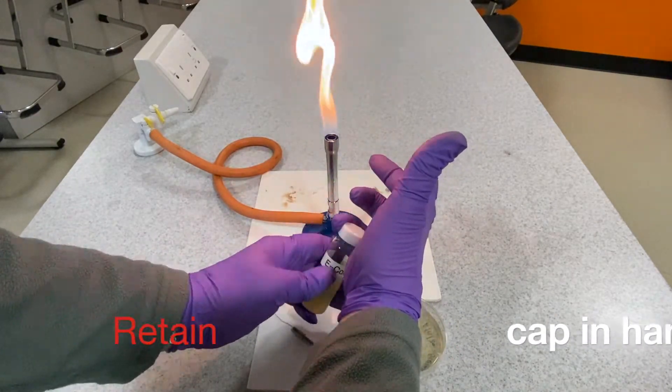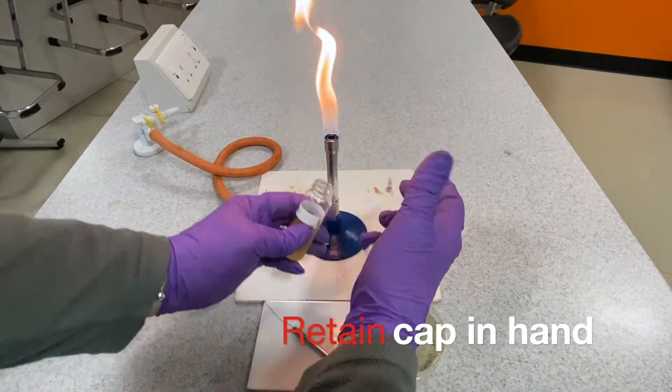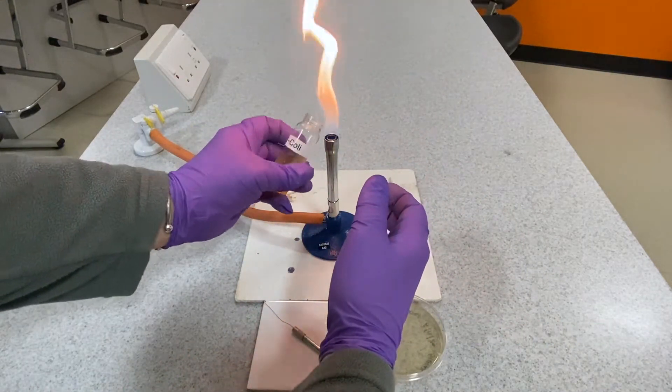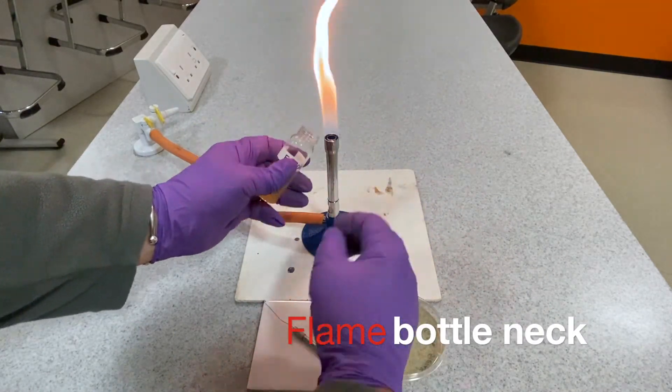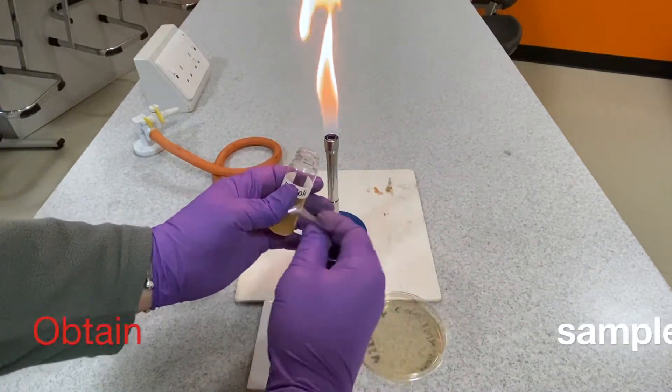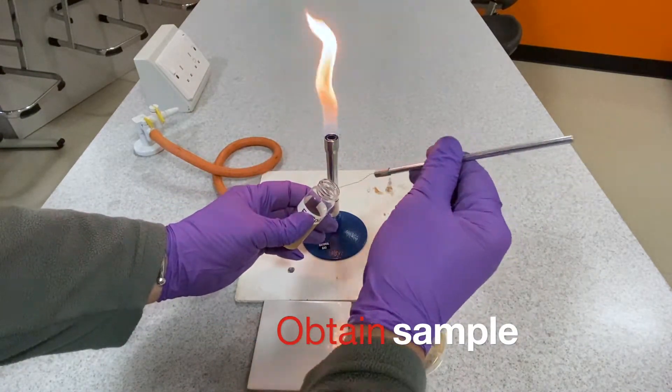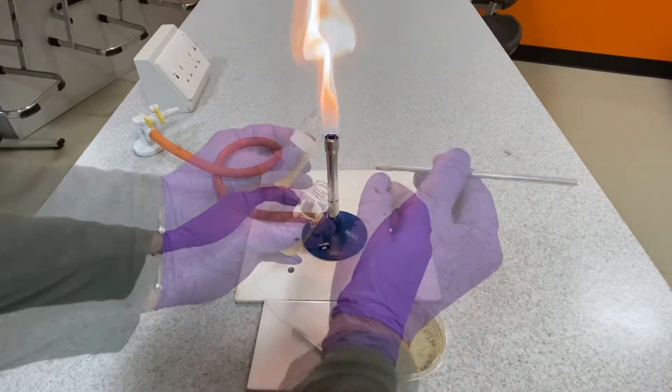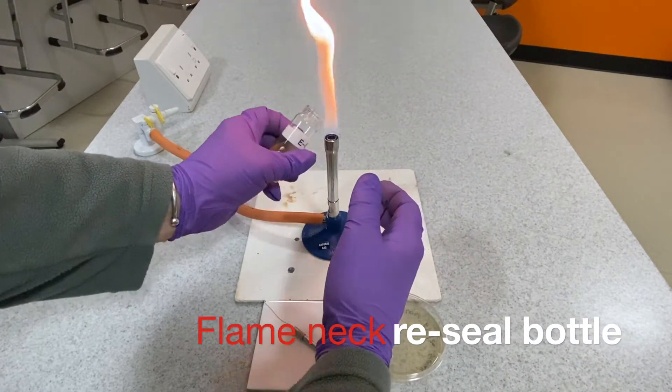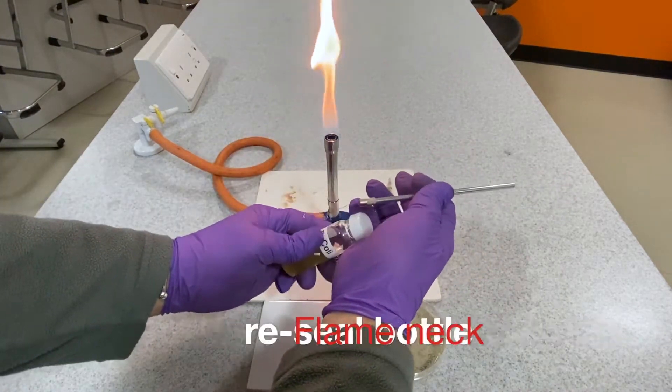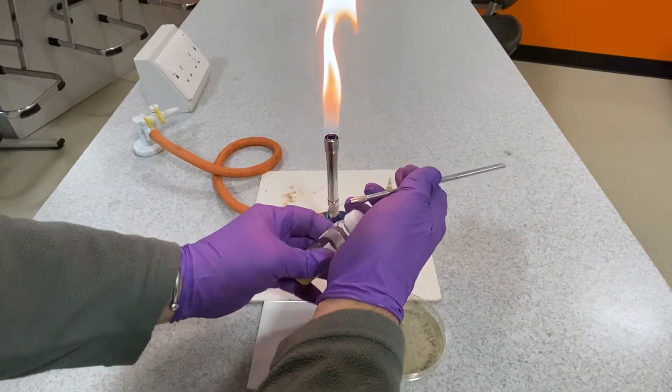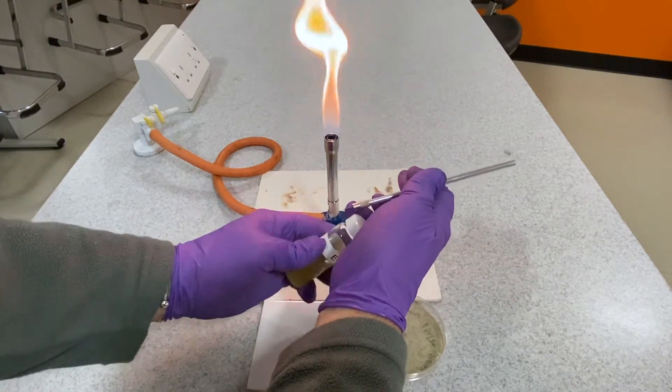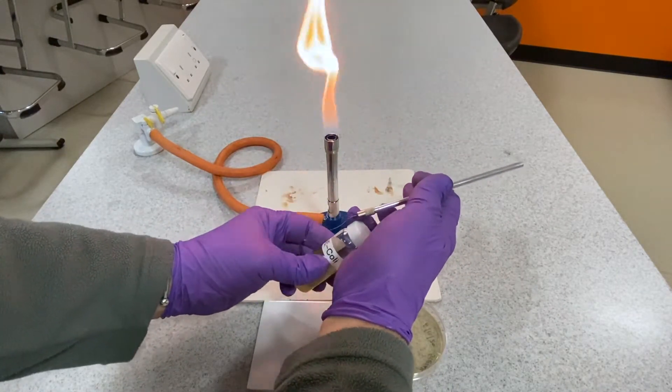Making a streak plate. From the bacteria culture sample bottle, remove the lid but retain it within your hand next to the little finger of your right hand. Flame the neck of the bottle, obtain a sample of bacteria using the sterilized wire loop, reflame the neck of the bottle and seal the bottle itself.